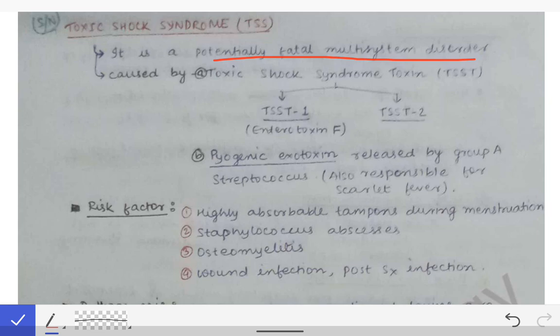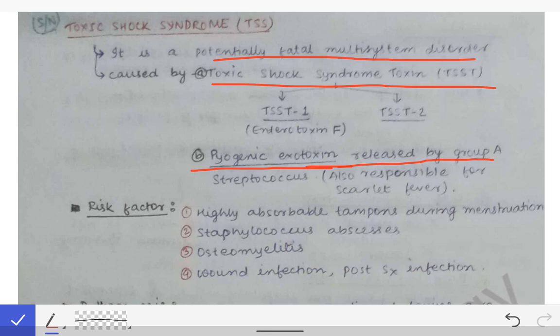This potentially fatal multi-system disorder is caused by two things: one is the toxic shock syndrome toxin (TSST), and the other is the pyogenic exotoxin released by Group A Streptococcus. The toxic shock syndrome toxin is released by Staphylococcus and is of two types: TST1 and TST2.